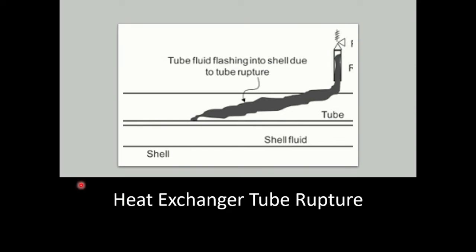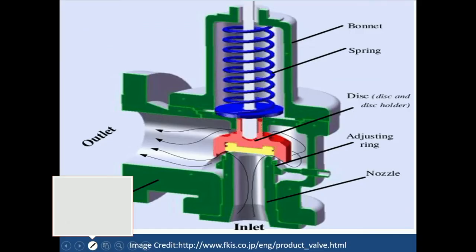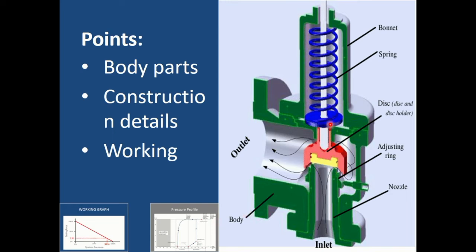Another cause is cooling system failure — a typical example in any chemical plant where cooling system failure causes the temperature to rise exponentially, which can be a problem. Now let's look at a cut view of a pressure safety valve. The bonnet is the outer structure and should be strong enough to bear any mechanical vibration. A spring is attached and plays a vital role in the safety valve because the spring tension is adjusted depending upon the set point.